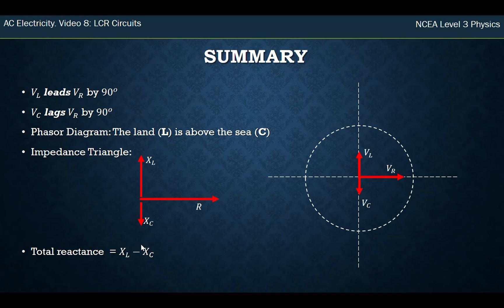So in summary we've got an LCR circuit, which has the three components of an AC circuit. And you can see it easily on the diagram. Remember I remember it from land is above the sea. And this is in words, the voltage over the inductor leads the voltage over the resistor by 90 degrees. And the voltage over the capacitor lags by 90 degrees. Our impedance triangle is the same relationship. And if we wanted to find the total impedance, the first step we would do is find the total reactance, which is just one of the vertical ones minus the other.